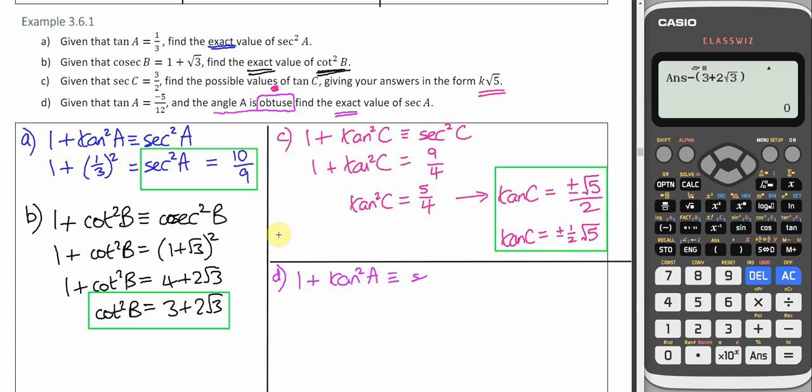So 1 plus tan squared A is sec squared A. Let's put in what we know. Well, tan A is minus 5 over 12. So squaring that gives us 25 over 144.